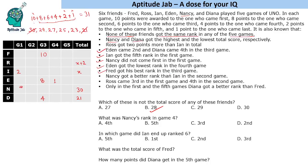Nancy got a better rank than Ian in the second game. Ross came third in the first game — so six points — and fourth in the second game — so four points. Only in the first and fifth games did Dinah get a better rank than Fred, so we mark Dinah as having a better rank than Fred in games one and five only.